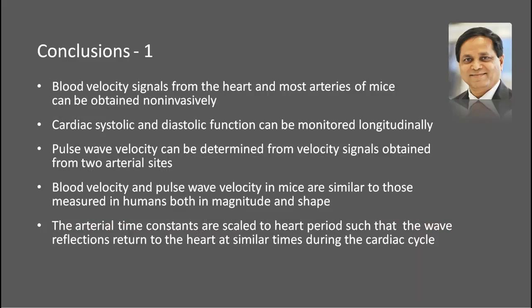In conclusion of Part 1: blood velocity signals can be obtained from the heart and most arteries non-invasively, making longitudinal studies possible — whether for cardiac systolic function, diastolic function, or pulse wave velocities. We can determine pulse wave velocities from two arterial sites either non-simultaneously or simultaneously, with simultaneous being better to minimize errors. Blood velocity and pulse wave velocity in mice are similar to those in humans both in magnitude and shape. The arterial time constants are scaled to the heart period such that wave reflections return to the heart at similar times, which is key in determining disease conditions like hypertension or cardiomyopathy.